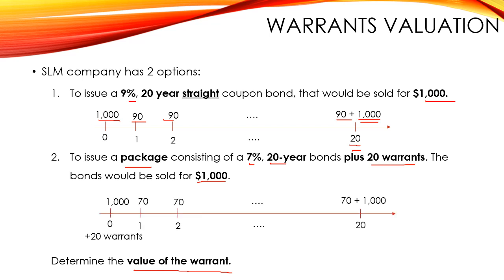However, in the second option, he would pay the $1,000, and he would receive the $70 coupon payment until maturity. At maturity, he would receive the $70 plus the par value. In order to encourage investors to choose option number 2 and not option number 1, the company must give them the warrants.